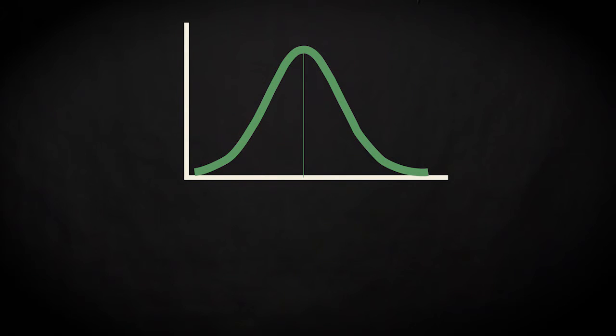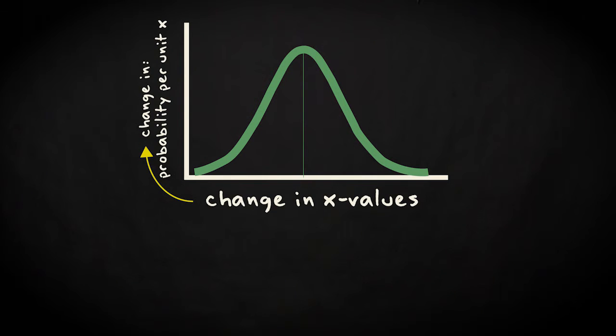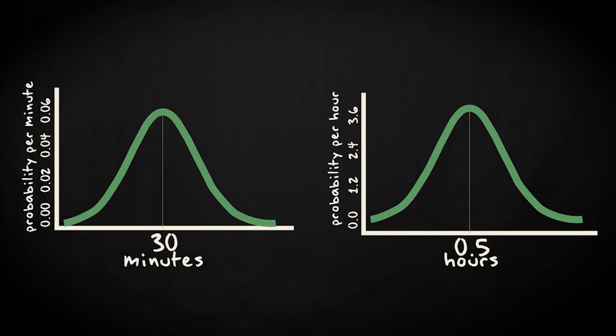Another property of the curve is that the values and the units at the y-axis change if you change the units along the x-axis. For example, if you'd express the time in hours instead of minutes, the probability density values change from a probability per minute to a probability per hour. Hence, these increase 60-fold.